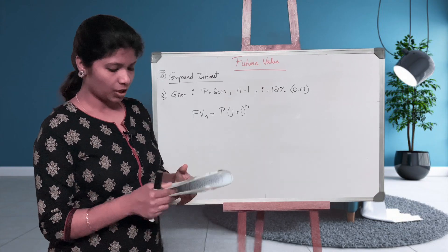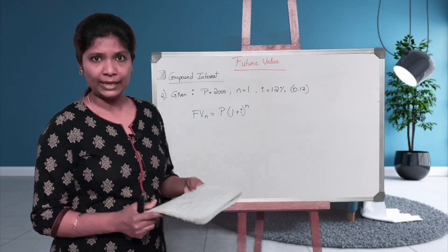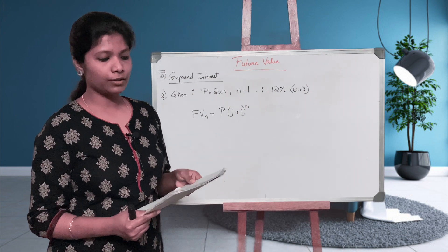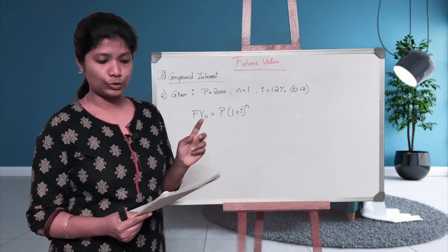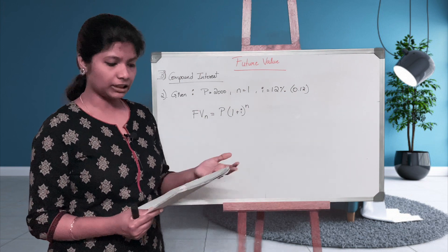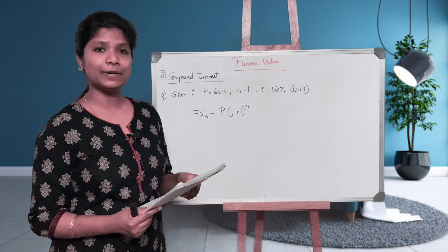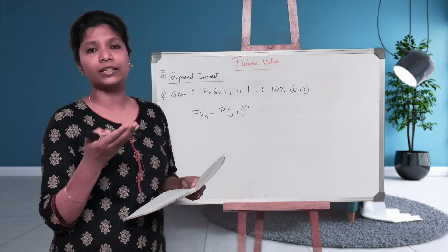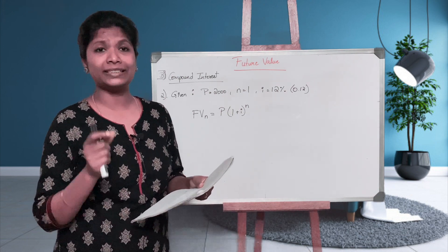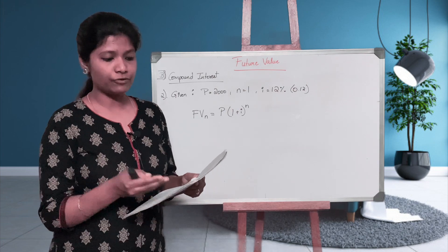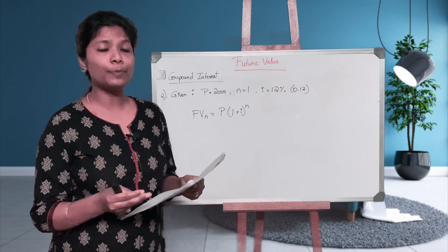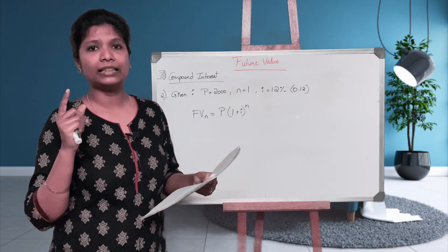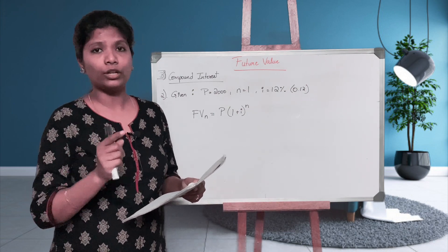The second question is about compounding. Find out the future value of a sum of rupees 2,000 after a year, compounded at 12% per annum. Students often get confused when the number of years is not explicitly given. Here they have said 'after a year,' which means the time period is exactly one year.